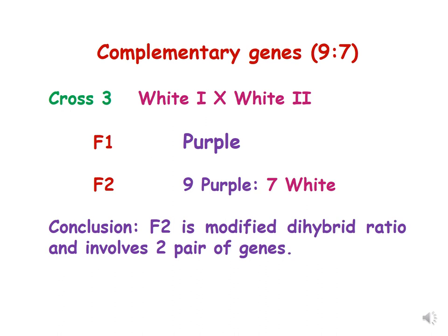From this cross they concluded that because the F2 ratio is 9:7 — a modified dihybrid ratio — it involves two pairs of genes. So white-1 and white-2 are not caused by one pair of genes but by two different pairs of genes.